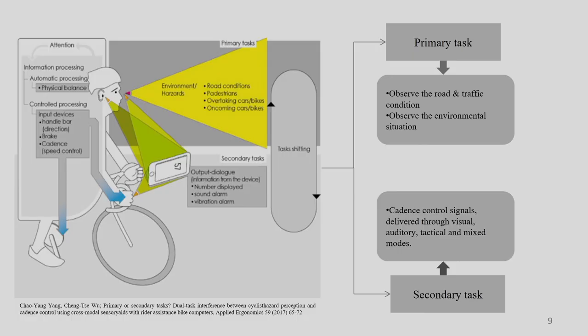Designing the percentage contribution of primary and secondary tasks in a whole system is very important, and decisions must be made by the designer based on experimental results. For each context, primary and secondary tasks are different, and the contribution needs to be calculated beforehand so there is less chance of accident. The primary task in the bicycle/driving example involves observing the road and traffic condition and environmental situation, while the secondary task involves responding to control signals delivered through visual, auditory, tactile, or mixed modes.